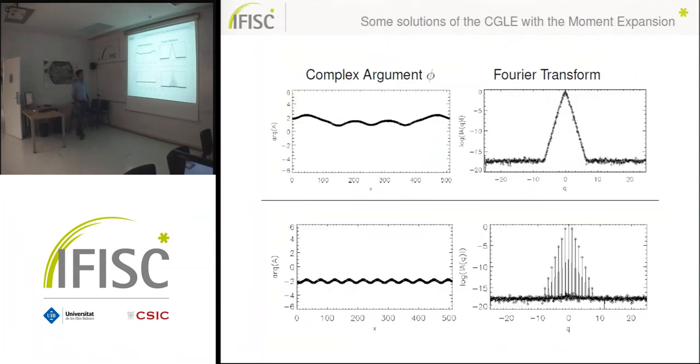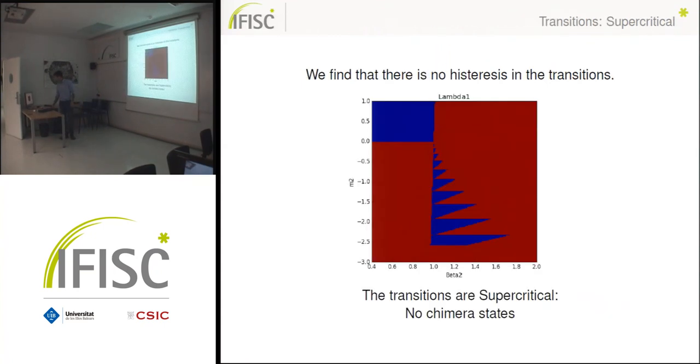Here we see some examples of the simulation in the turbulent regime. This is the argument of the complex field and the Fourier transform. And here we have an example of the pattern formation regime. So again what we did was to measure that order parameter along the transitions between the plane waves and the turbulent regimes. But what we found again was that the transitions were supercritical and there was no hysteresis. So we didn't find any room to find chimeras in this model.